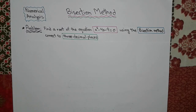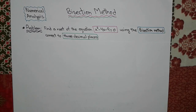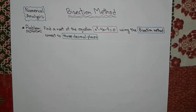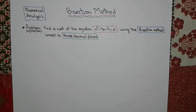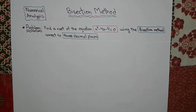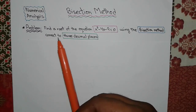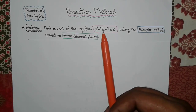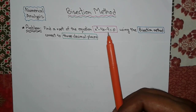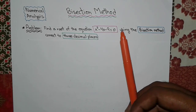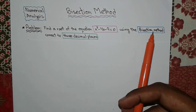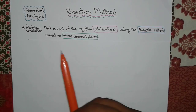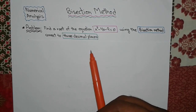Assalamu alaikum everyone. Today I will solve this problem using the bisection method. The problem says: find a root of the equation x³ - 4x - 9 = 0 using the bisection method, correct to three decimal places.